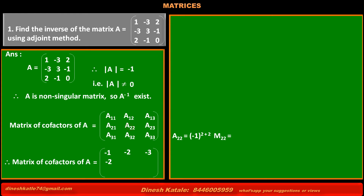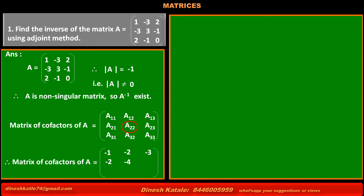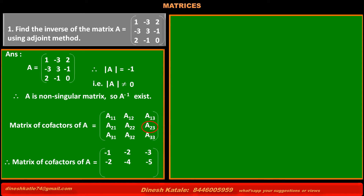A22 is the cofactor of element at second row, second column, equal to (-1) raised to 2+2 into its minor M22. That is (-1) raised to 4 into its minor with elements 1, 2, 2, 0. Solving, we get -4. So cofactor A22 is -4. A23 is the cofactor at second row, third column, equal to (-1) raised to 2+3 into minor M23, that is (-1) raised to 5 into minor with elements 1, -3, 2, -1. Solving, we get -5. So cofactor A23 is -5.